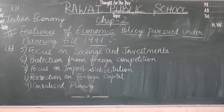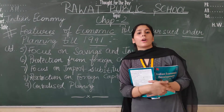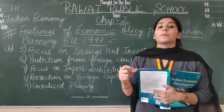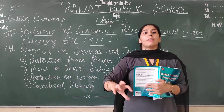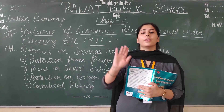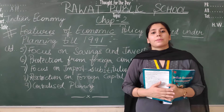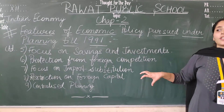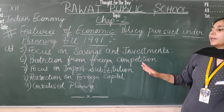The next point is restriction on foreign capital. Foreign direct investment was completely controlled and regulated through the Foreign Exchange Regulation Act (FERA). This act has now been abolished. Foreign loans were preferred over foreign direct investment. When the economy needed funds, we did not go for FDI because investment comes with ownership — if someone invests, they will demand ownership. We were not in a state to give foreigners ownership, so we took loans instead. This was basically to minimize the control of the domestic market by foreign investors.